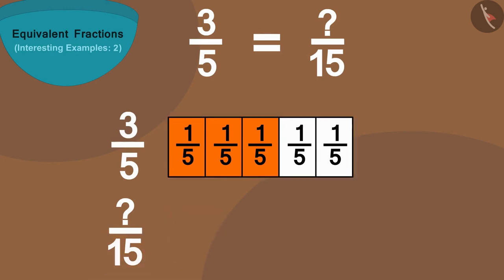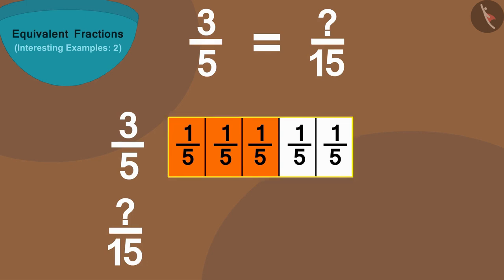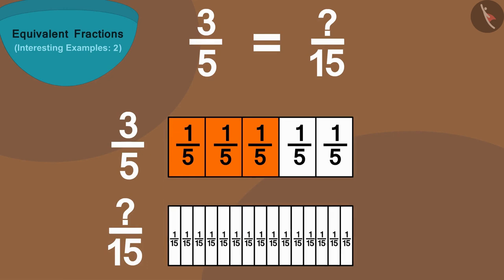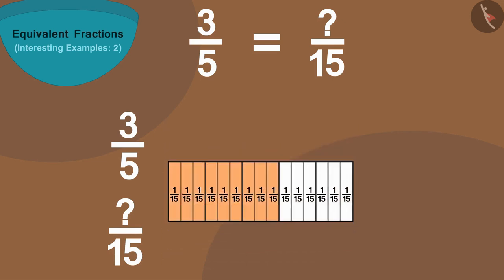Come, let us make a strip of equal length just below it and divide it into fifteen equal parts. Now if we put this strip on top of the first strip, in this way we will find that fifteen parts of this strip are equal to five parts of the first strip.